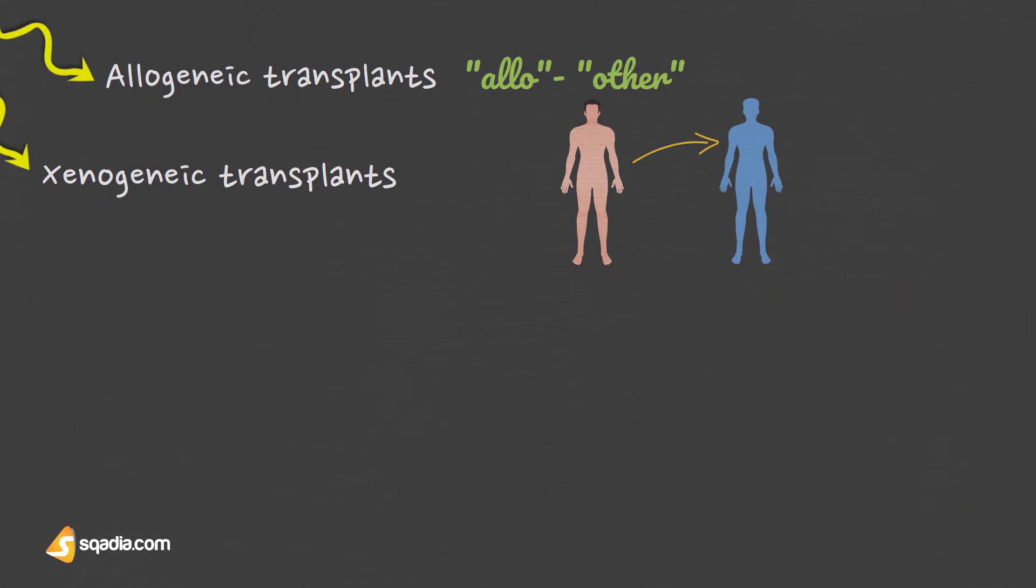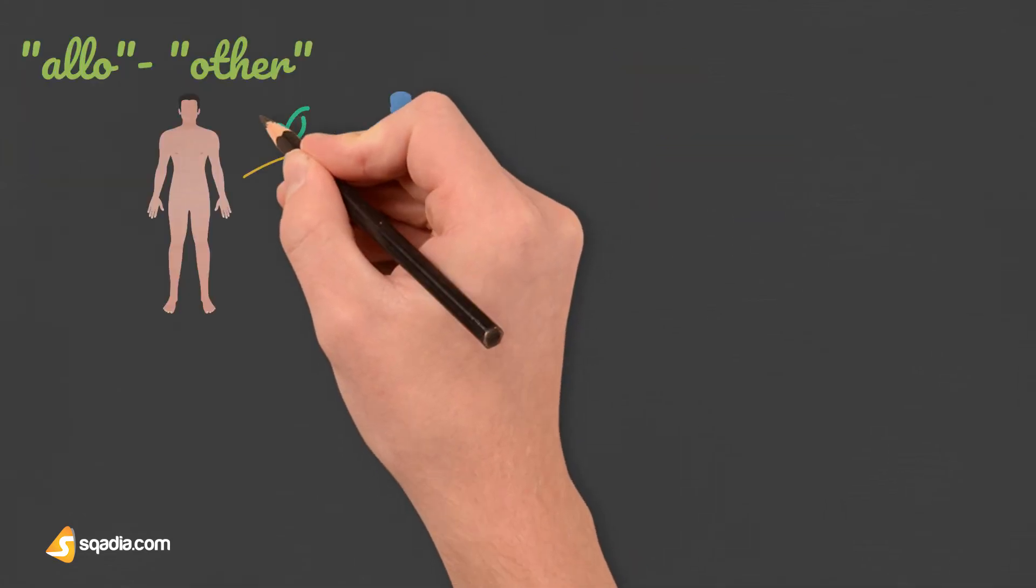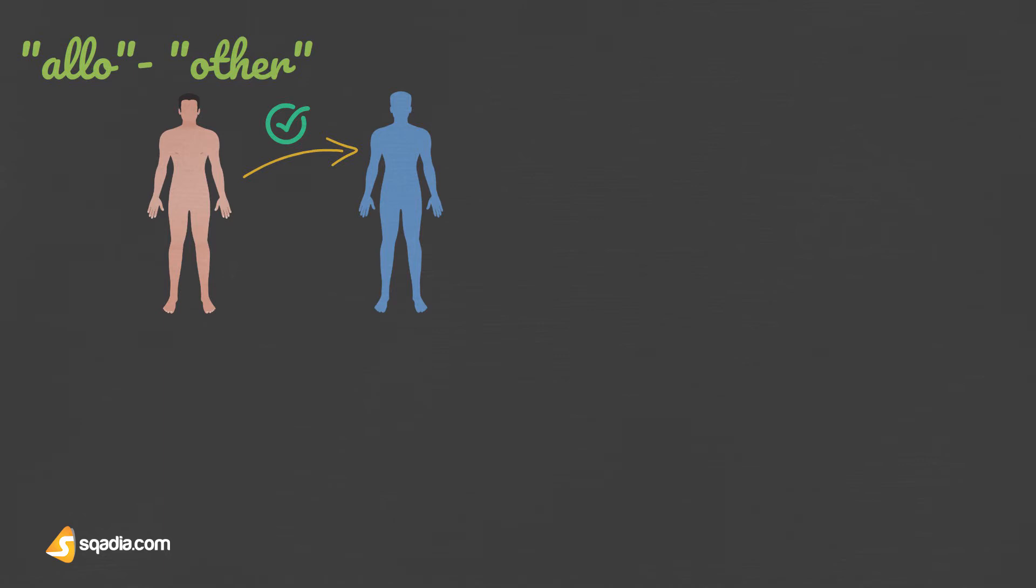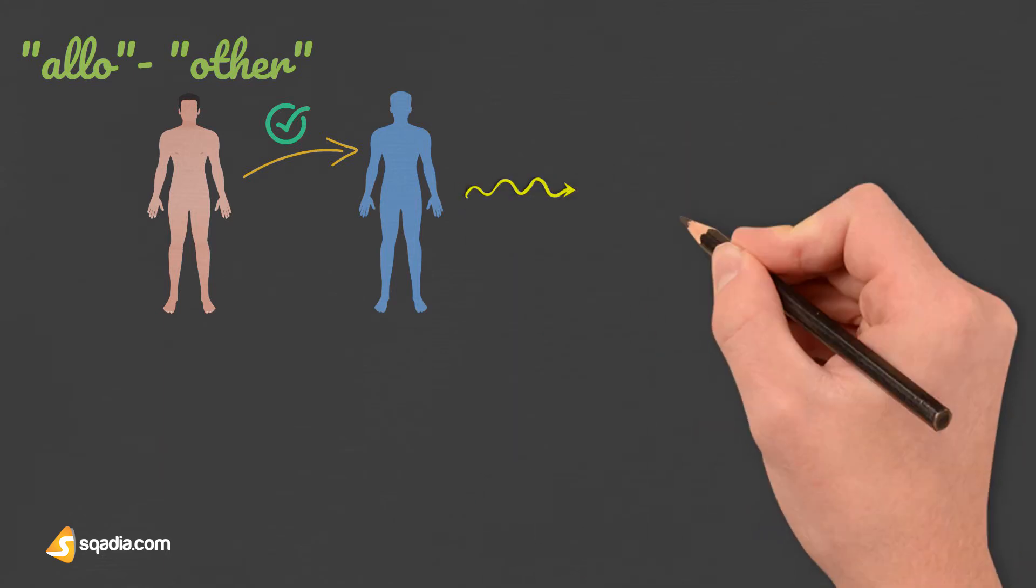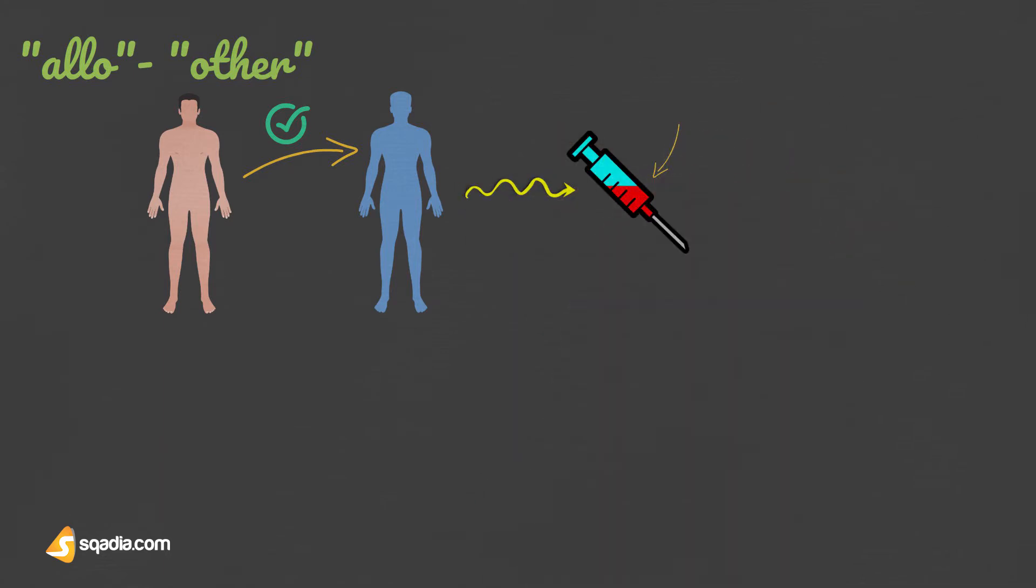Allogenic stem cell transplant uses donor stem cells. This is the most common type of allogenic transplant. The stem cells come from a donor whose tissue type closely matches yours. Blood taken from placenta and umbilical cord of newborns is also a type of allogenic transplant. This small volume of cord blood has a high number of stem cells that tend to multiply quickly. Cord blood transplants are done for both adults and children.